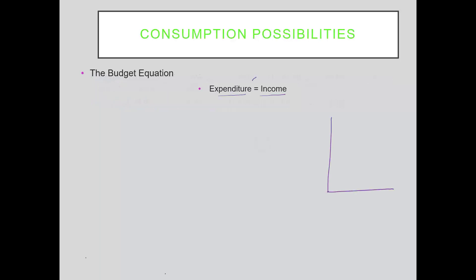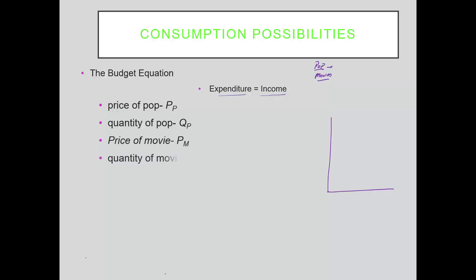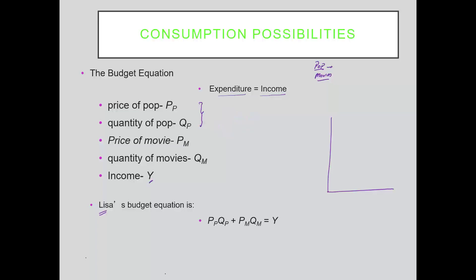The constraint is that expenditure has to be less than or equal to income. Let's assume the consumer spends all income on goods — no saving here — and consider two goods: drinks and movies. The variables we need are the price of the drink, the quantity purchased, the price of a movie, and the number of movies watched. Income is Y. If Lisa buys three bottles of drinks at two dollars each, she's spending six dollars on drinks. This is the expenditure on drinks, and similarly we define the expenditure on movies.